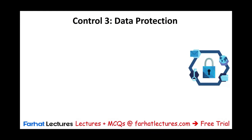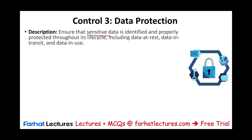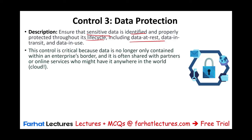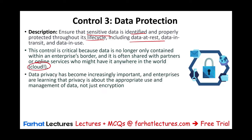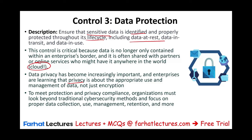Moving to Control 3, which is Data Protection. The goal is to ensure that sensitive data is identified and properly protected throughout its life cycle, including data at rest, data in transit, and data in use. This control is critical because data is no longer contained within the enterprise — it is shared with partners, customers, and vendors, and may exist in the cloud anywhere in the world. Data privacy has become increasingly important, and enterprises are learning that privacy is about the appropriate use and management of data, not just encryption. Organizations must focus on proper data collection, use, management, and retention.